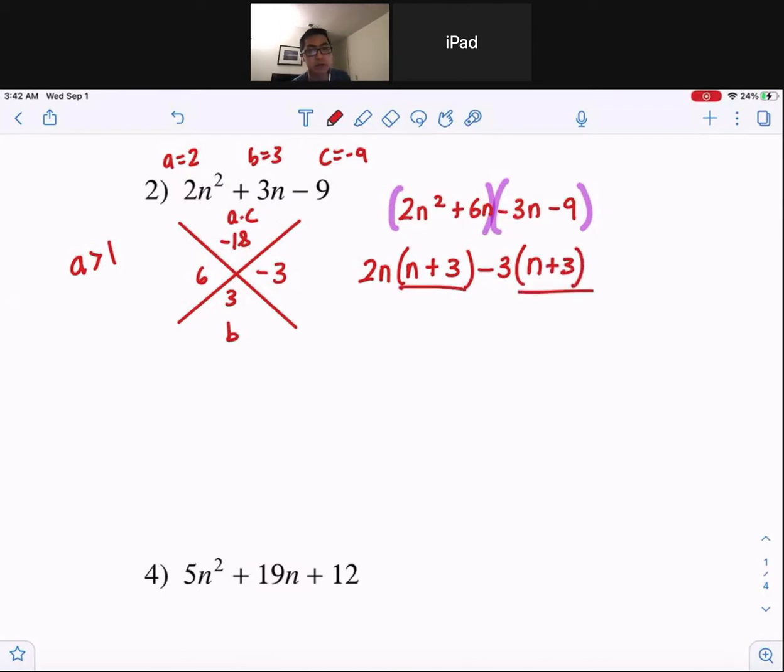Now notice you guys, these match up. So we can factor out by taking away an n plus 3 from both of them. And we get n plus 3 times 2n minus 3.